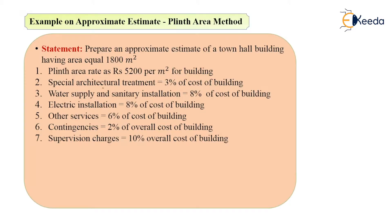Special architectural treatment is 3% of cost of building. Water supply and sanitary installation charges are 8% of cost of building. Electrical installation charges are also 8% of cost of building. Other services is 6% of cost of building. Contingencies and supervision charges are 2% and 10% respectively, but they are of the overall cost of building — meaning first you have to calculate the cost of building, then add architectural, water supply, electrical, and other service charges, and after adding all of these, take 2% as contingencies and 10% as supervision charges.